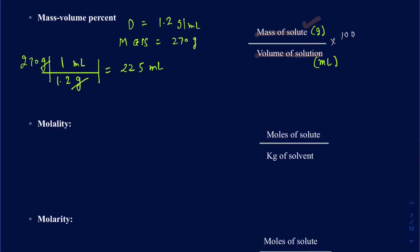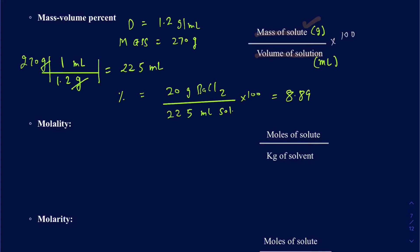Now we know the volume of the solution, so we can calculate mass volume percent. Mass of solute is 20 grams of BaCl₂, and the volume of solution is 225 milliliters. So 20 divided by 225, times 100, gives 8.89% BaCl₂ by mass volume.